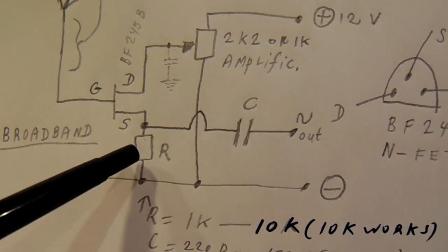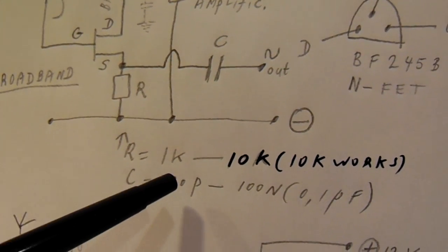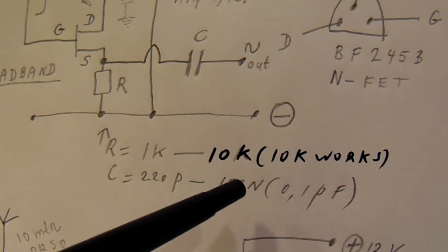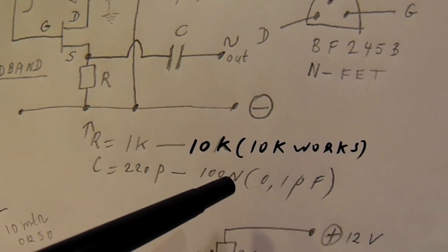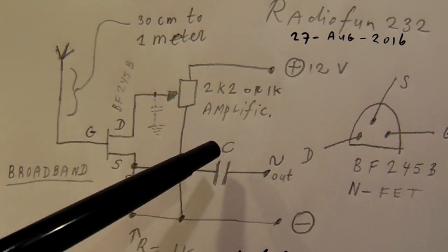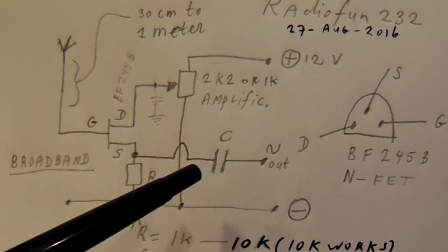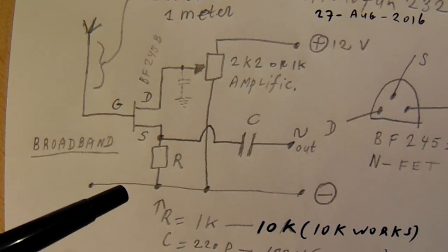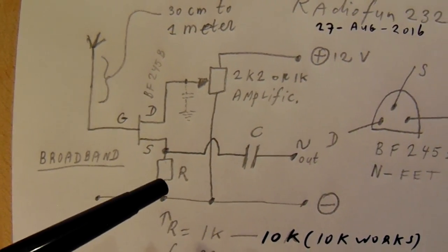The resistor here could be between 1k and 10k. I have experimented a lot and 10k always works. This capacitor is the outcoupling capacitor. It is a source follower, this circuit.